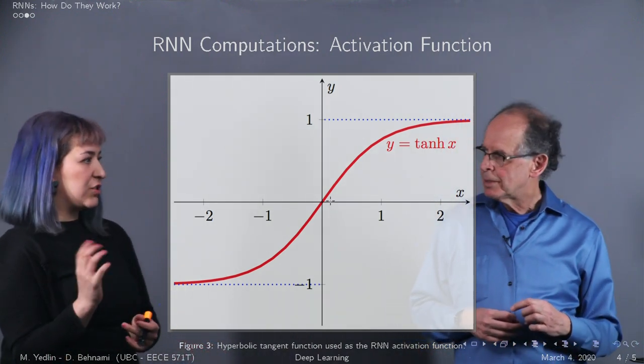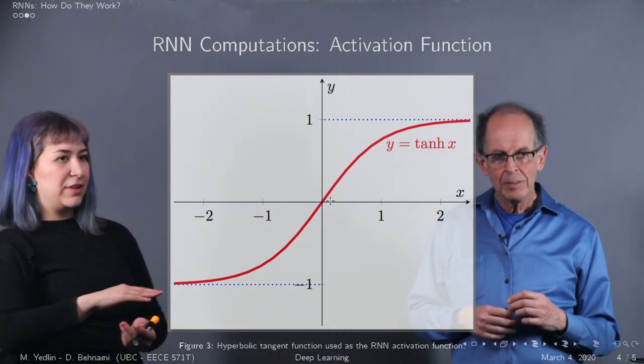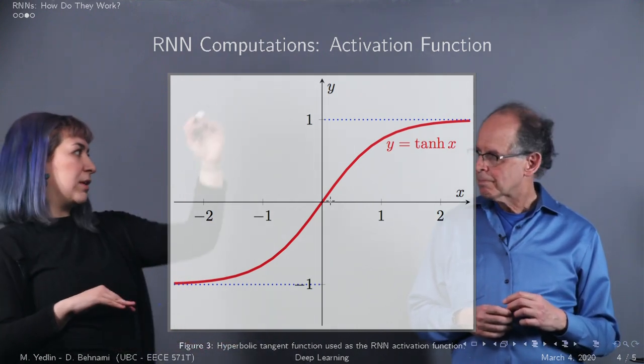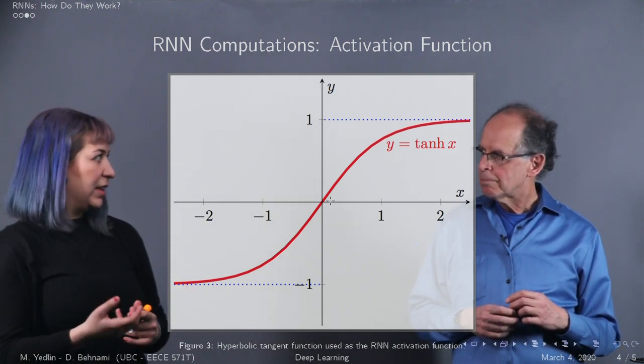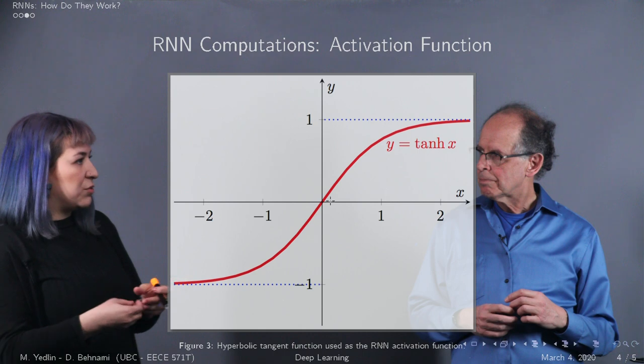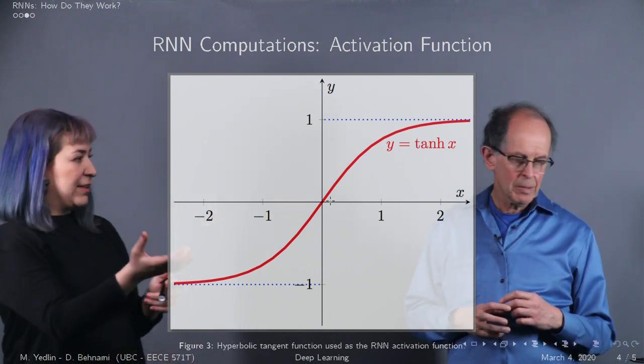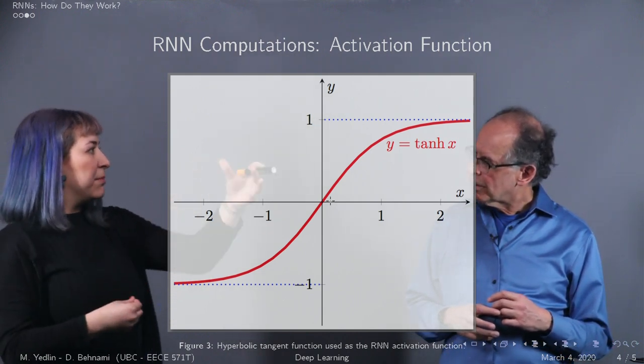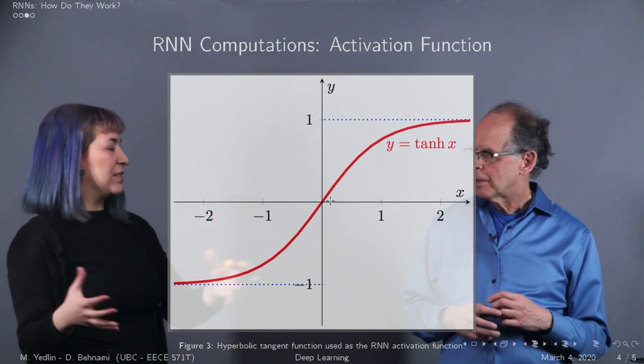The reason why we choose tanh compared to, say, sigmoid is that, as you can see on this graph, it's bounded the output between negative one and positive one. And what that does effectively is it allows the hidden state to have its value both increased and decreased, which, again, what it means is the hidden state can remember or forget relevant stuff in the time sequence once it's learning from the sequential data.